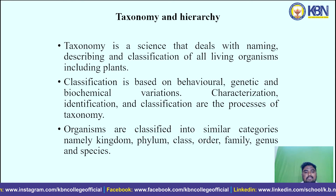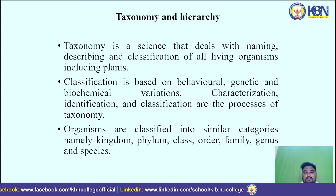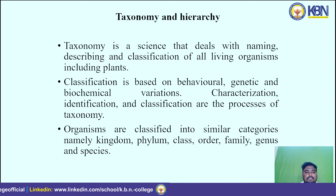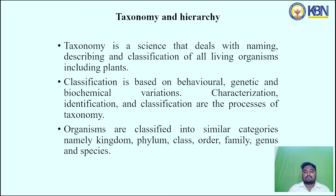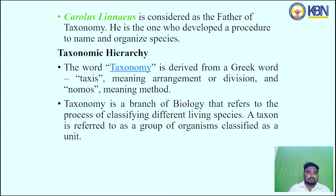Taxonomy is the science that deals with naming, describing and classifying all living organisms, including plants. Classification is based on behavioral, genetic and biochemical variations. Through characterization, identification and classification — the processes of taxonomy — organisms are classified into categories: Kingdom, Phylum, Class, Order, Family, Genus and Species. Carolus Linnaeus is considered the father of taxonomy; he developed the procedure to name and organize species.